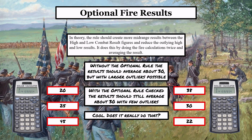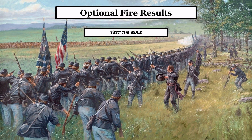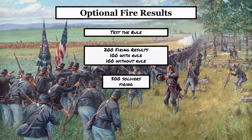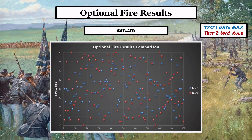Does it really actually do that? The only way to find out is to test the rule, and the way I did that was to do 200 different firing results — 100 with the rule checked and 100 without the rule checked. Again, we're doing 500 soldiers firing, the results are going to be between 10 and 50, the average is going to be 30, and there are no other modifiers involved. There is the chart. Test number one is in blue and that is with the rule; test number two is in red and that is without the rule.